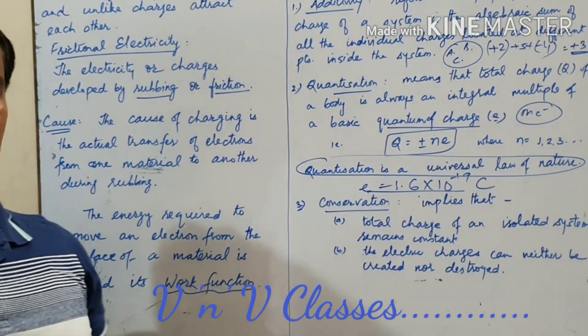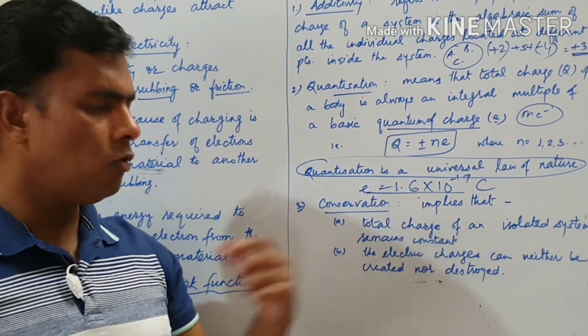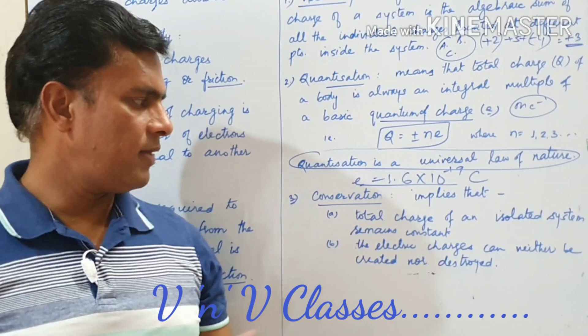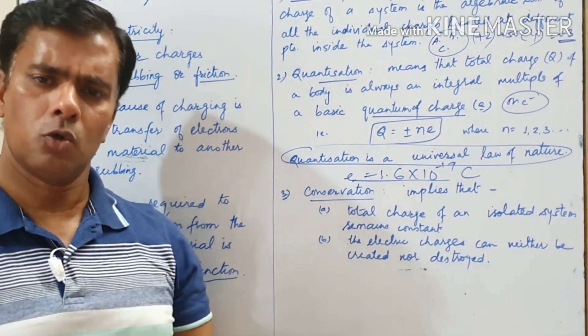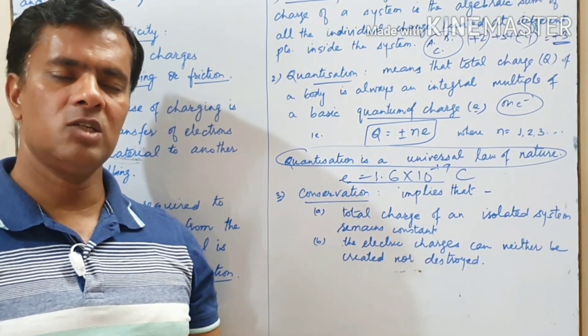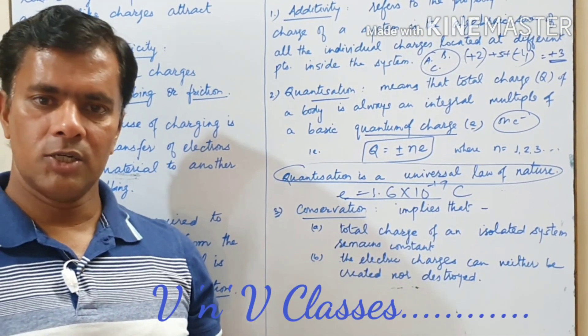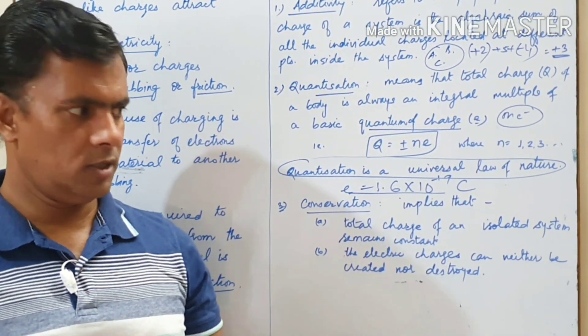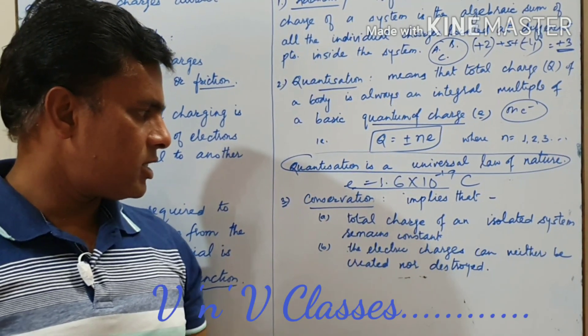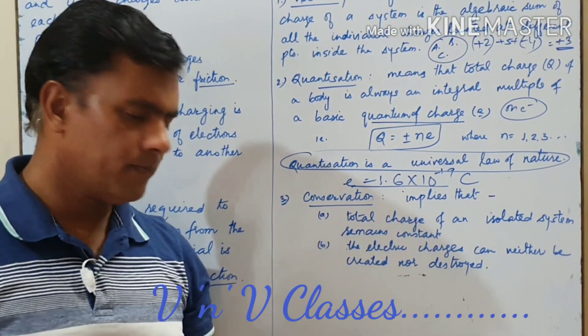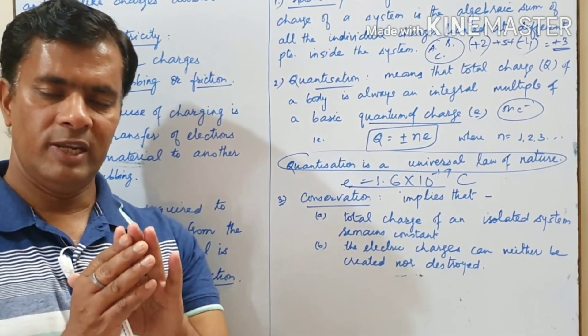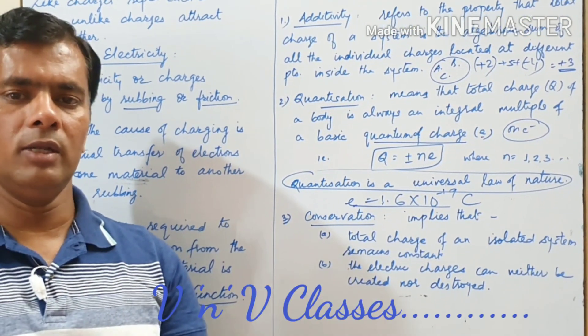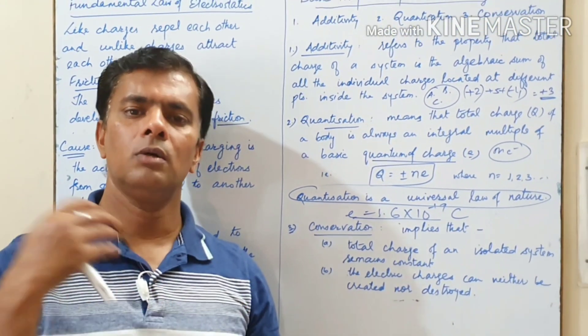Now the third property is conservation. It actually is referred into two steps. First tells the total charge of an isolated system remains constant. Any system comprising of any number of bodies, if they interact, the total charge of that system remains always constant. And the second is the electric charges can neither be created nor destroyed. Means neither we can create any new charge or we can destroy any charge but we can only transfer the charge from one body to another.